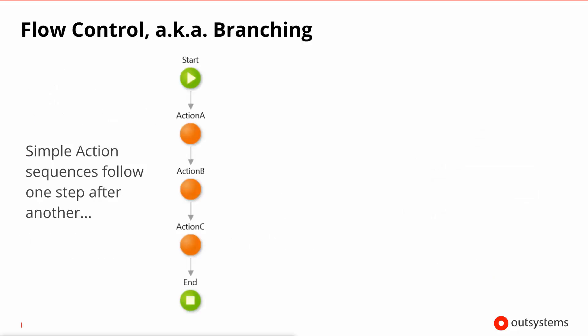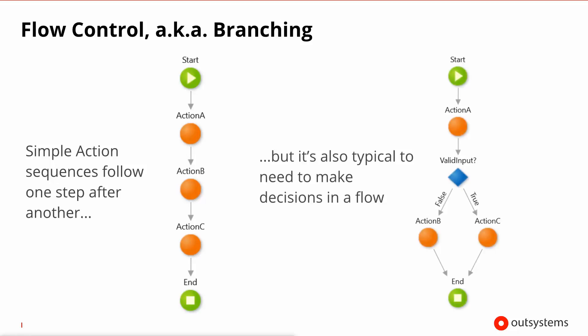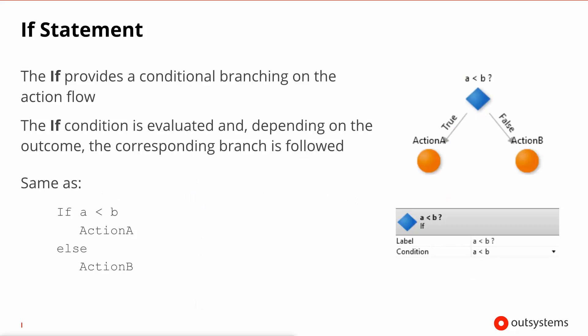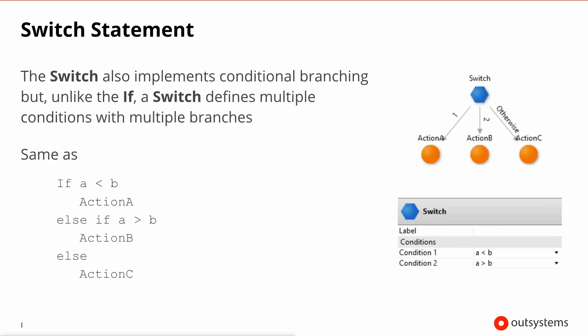A simple action can be just a direct sequence of other action calls. However, in most scenarios you will need to make decisions, branch, and do different behaviors depending on certain conditions. The simplest branching mechanic is the if statement. The if provides a condition that is evaluated at runtime and, depending on whether it evaluates to true or false, it takes one branch or the other. The switch statement behaves very much like a chaining of if statements.